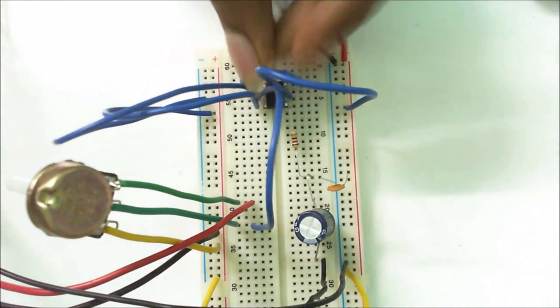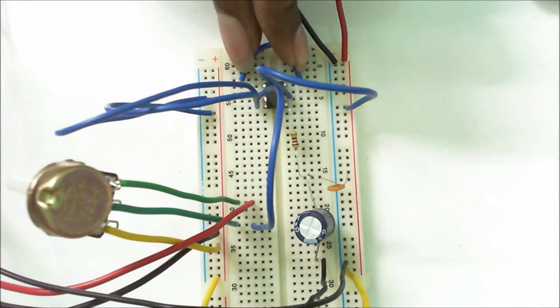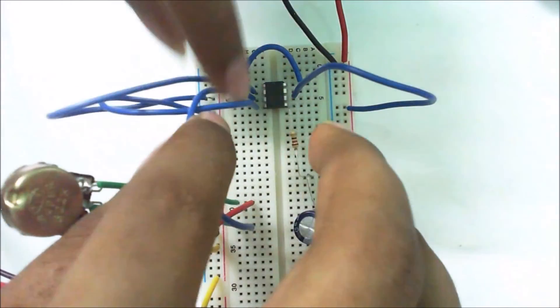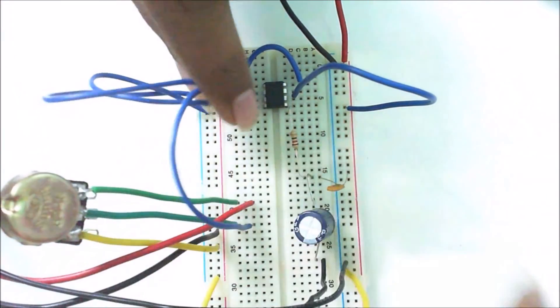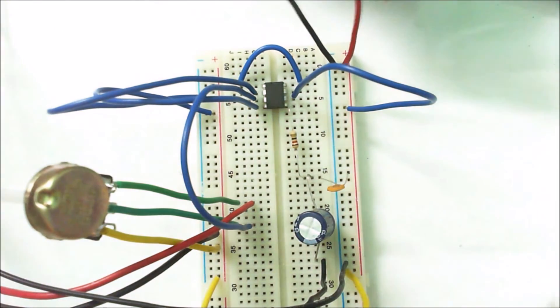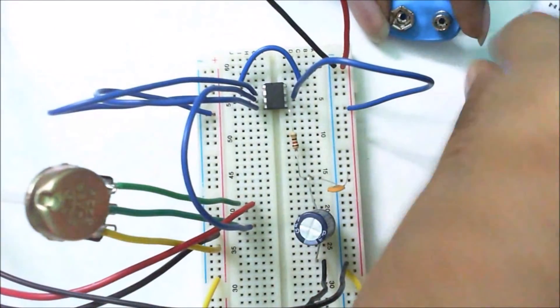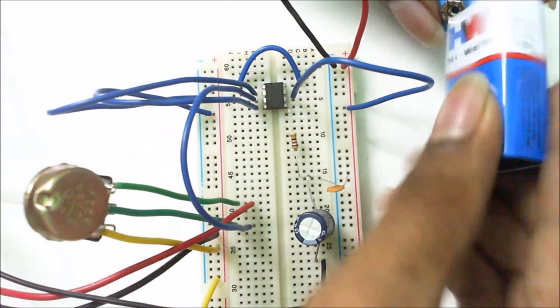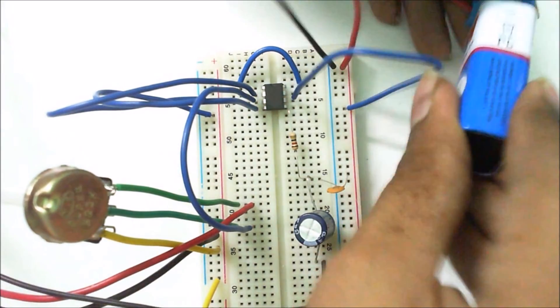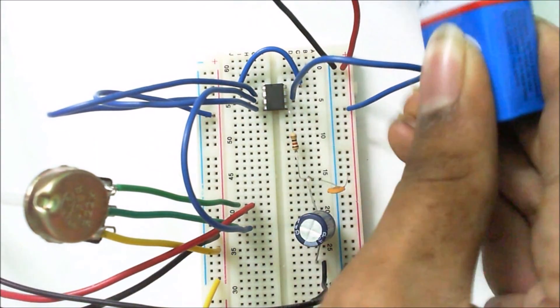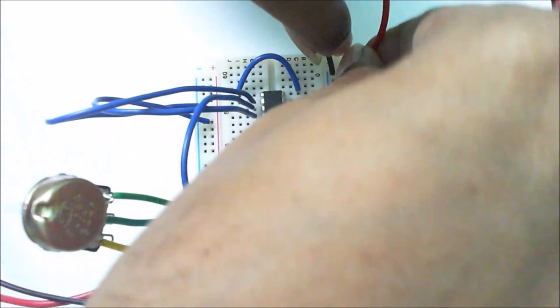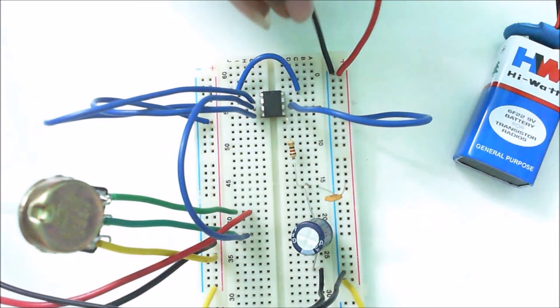Now the circuit is completed. By giving external power supply we can test our circuit. Varying the potentiometer will result in a change in the volume from the speaker. Output changes by varying the resistance.